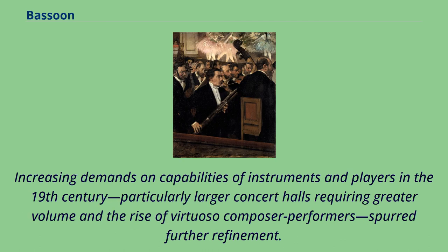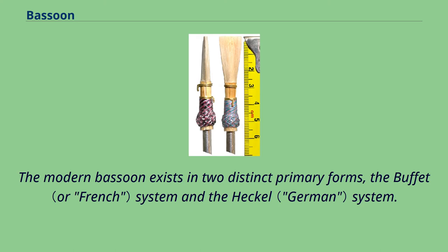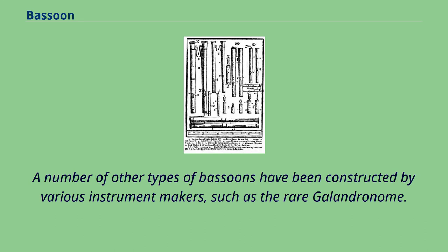Increased sophistication, both in manufacturing techniques and acoustical knowledge, made possible great improvements in the instrument's playability. The modern bassoon exists in two distinct primary forms: the buffet system and the Heckel system. Most of the world plays the Heckel system, while the buffet system is primarily played in France, Belgium, and parts of Latin America. A number of other types of bassoons have been constructed by various instrument makers, such as the rare gallodronome.